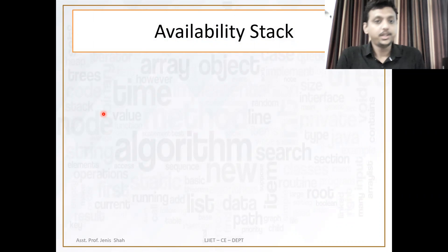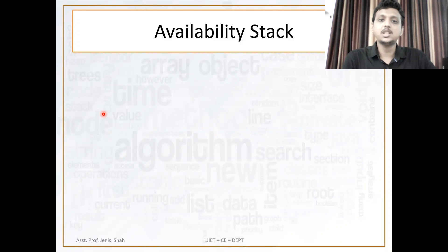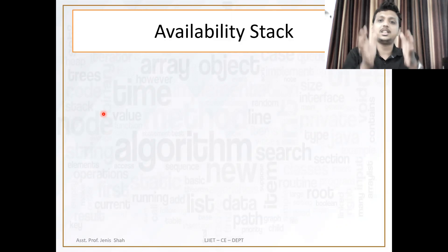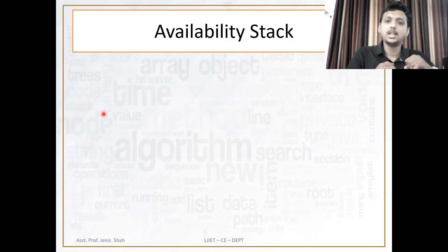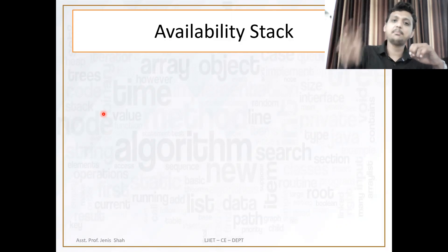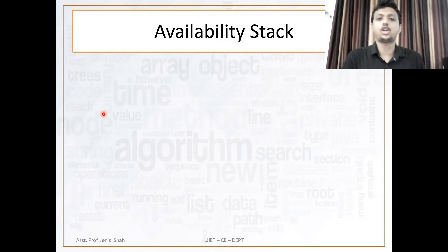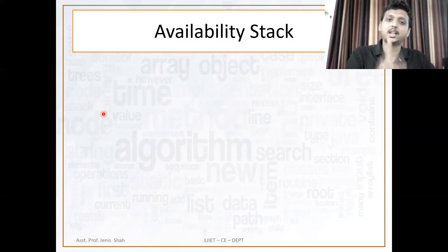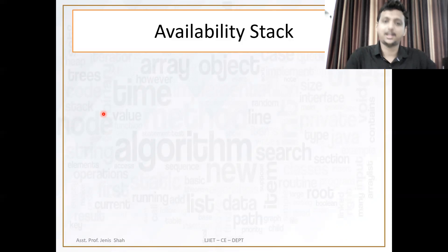This is a very important point: the availability stack. The availability stack means a stack which contains empty spaces in the memory. Whenever the linked list wants something from the memory — if I want to bring a node from the memory — I just go to the availability stack and check whether free slots are available or not. Linked list uses dynamic memory allocation, which means it works at runtime. If there are no empty spaces in the memory, you cannot create a node from the availability stack.